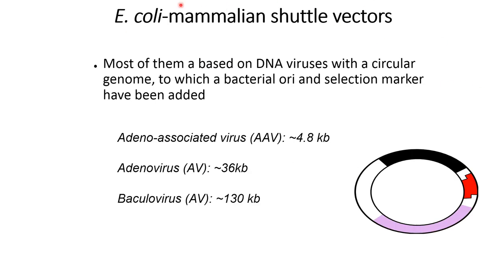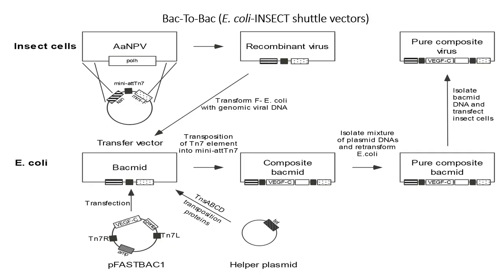Next is the E. coli-mammalian shuttle vector. Most of them are DNA viruses with a circular genome to which a bacterial origin and selectable marker have been added. Examples include adeno-associated virus, adenovirus, or baculovirus.